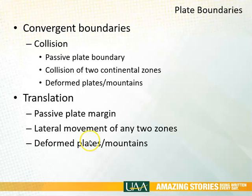Another type of convergent plate boundary is an area of collision. This is called a passive plate boundary, but it's really not very passive — there are lots of earthquakes and lots of deformation taking place when two continental zones hit one another. Another type is a translation boundary, also a passive plate margin, where you get lateral movement along the plates. That deformation in all cases produces mountains and earthquakes and all those interesting things.